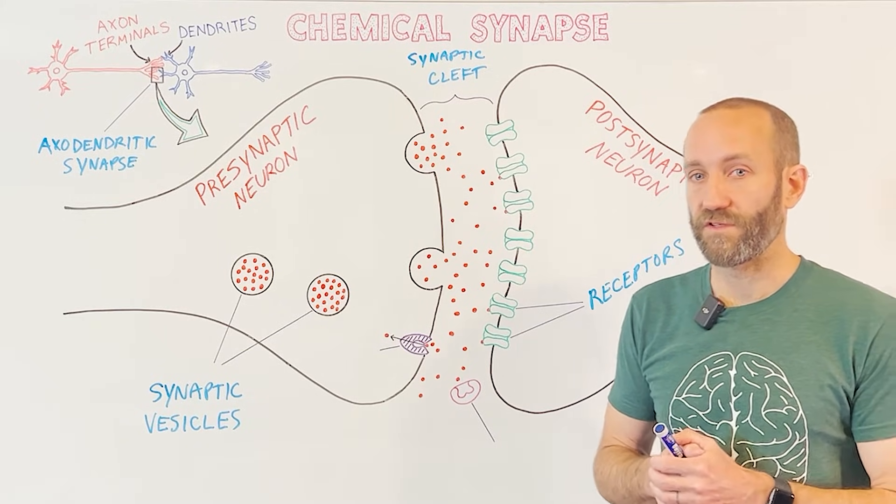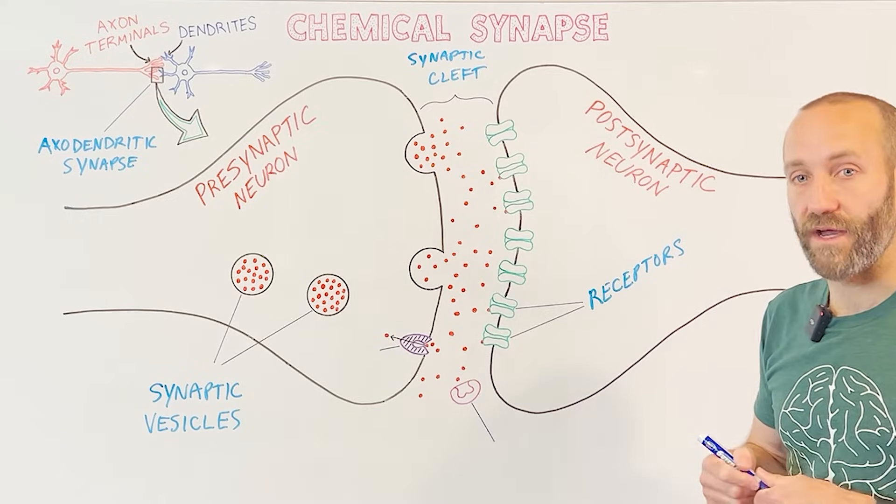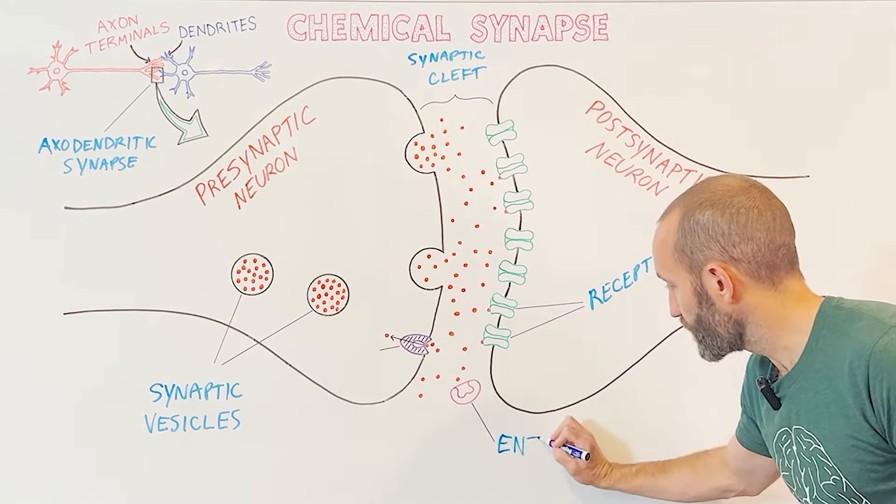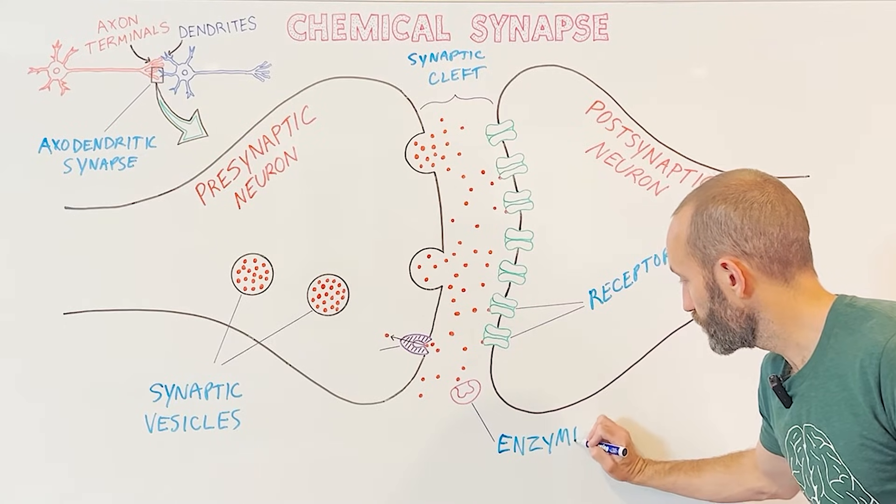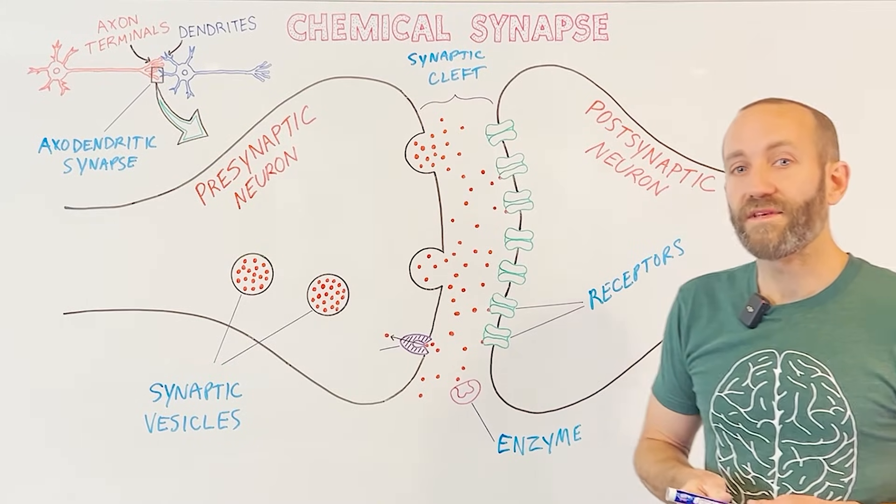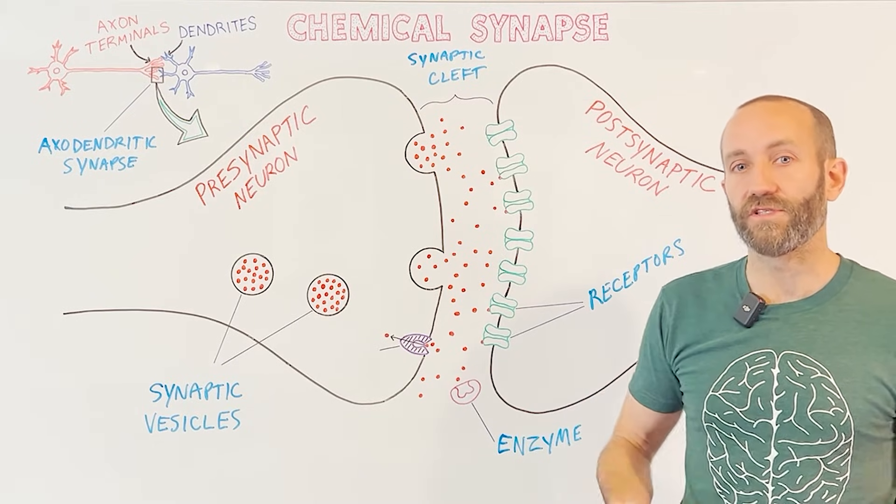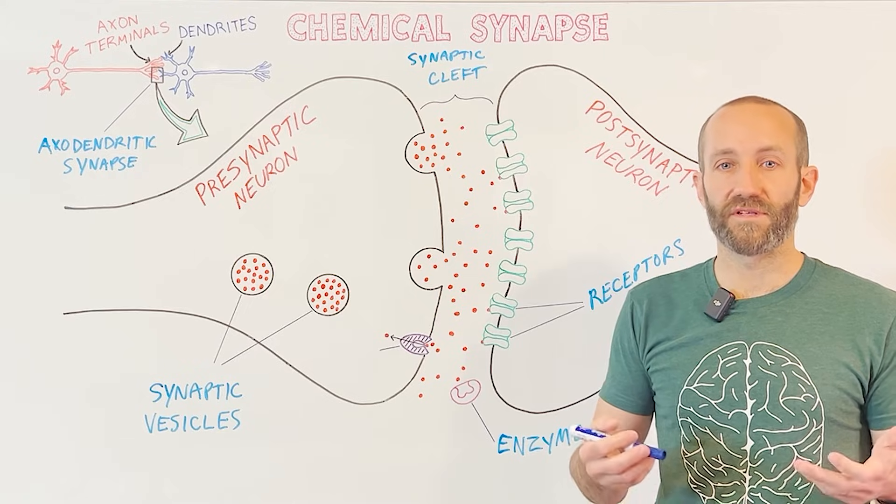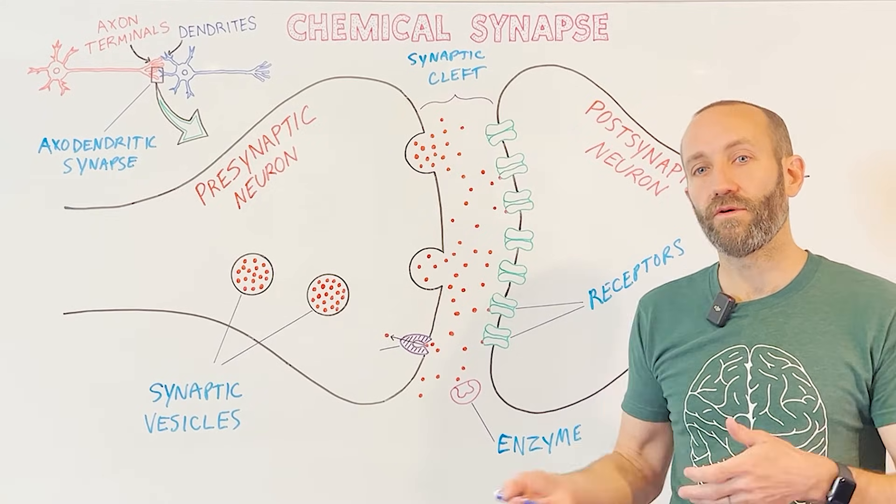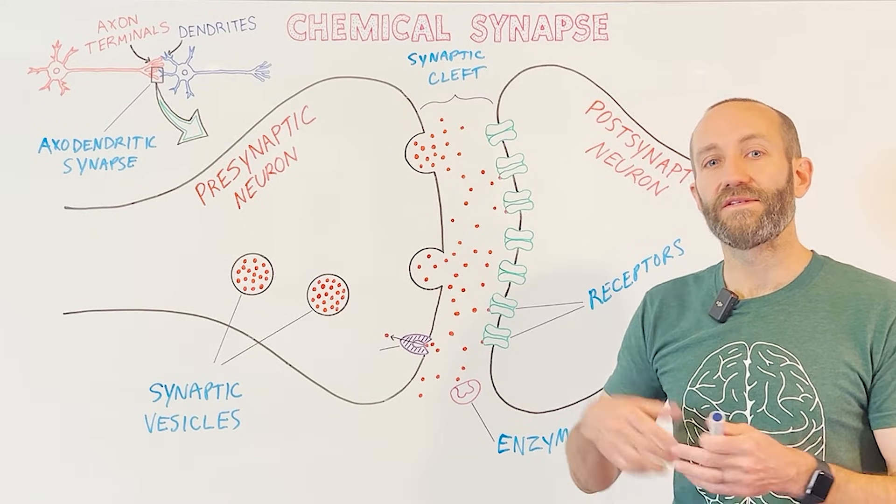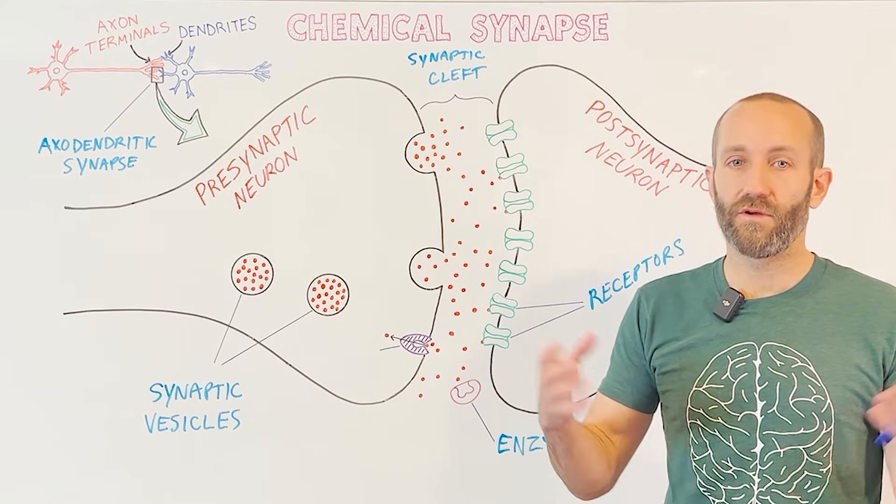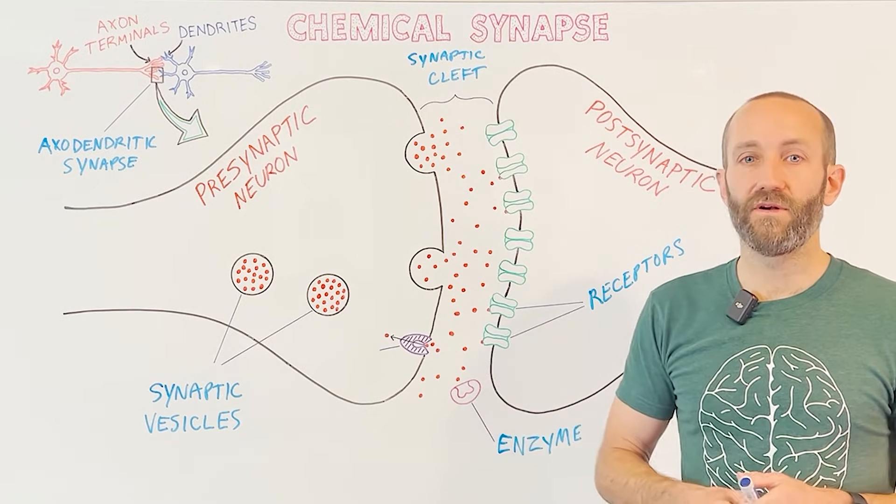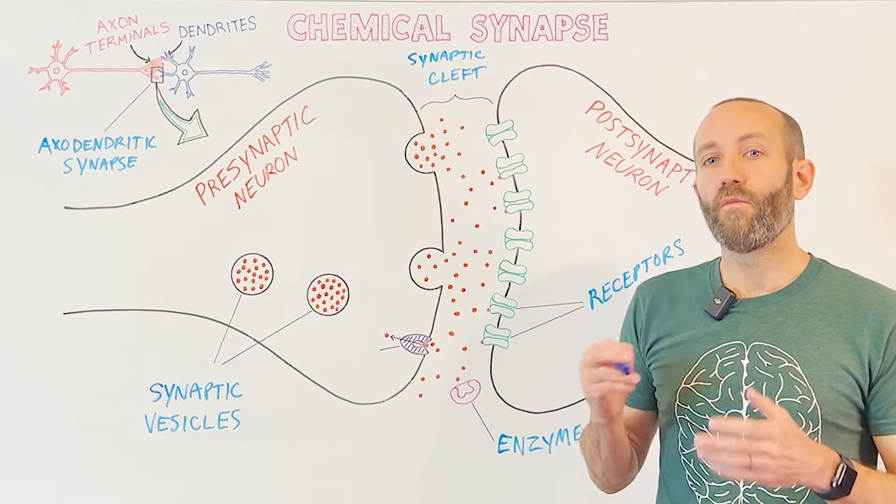Another method of removing neurotransmitters from the synaptic cleft is through the use of enzymes. So this structure right here is representing an enzyme. Enzymes can inactivate and break down neurotransmitters, a process known as enzymatic degradation. The neurotransmitter acetylcholine, for example, is broken down by an enzyme called acetylcholinesterase. This enzyme breaks acetylcholine down into its constituent parts, choline and acetate, and these products can be taken back up into the presynaptic neuron and used to make more acetylcholine.